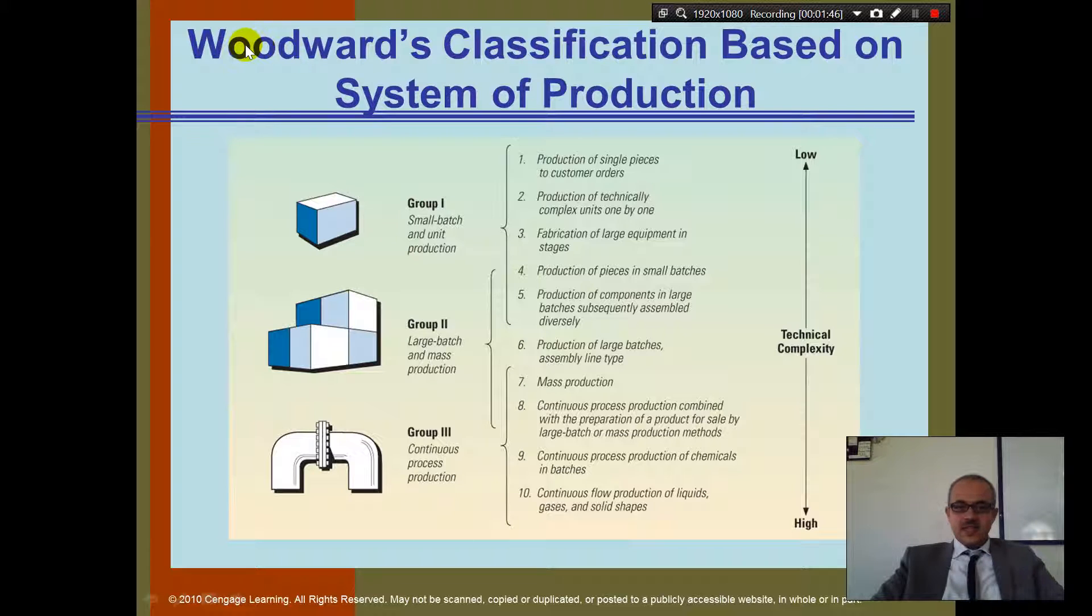If we look at this Woodward classification based on systems of production, with this graph, I try to show you that there are group 1, group 2, group 3. Group 1 is a small batch in unit production. So here, if we are producing, let's say, we produce one cake at a time.